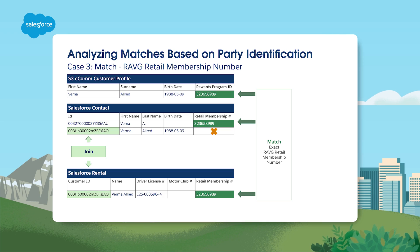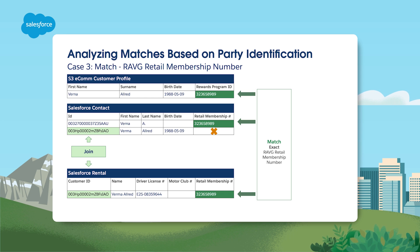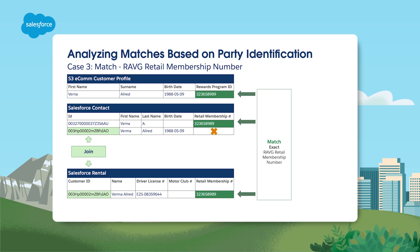Let's analyze a match based on party identification. Here there is an exact match based on the rewards program ID and retail membership numbers. You can see three party identification records with the same RAVG retail membership values in the identification number. The values in party are the same values you see for individual ID based upon the unified individual page. This illustrates matching records with the same party identification type, name, and number to create one unified profile.